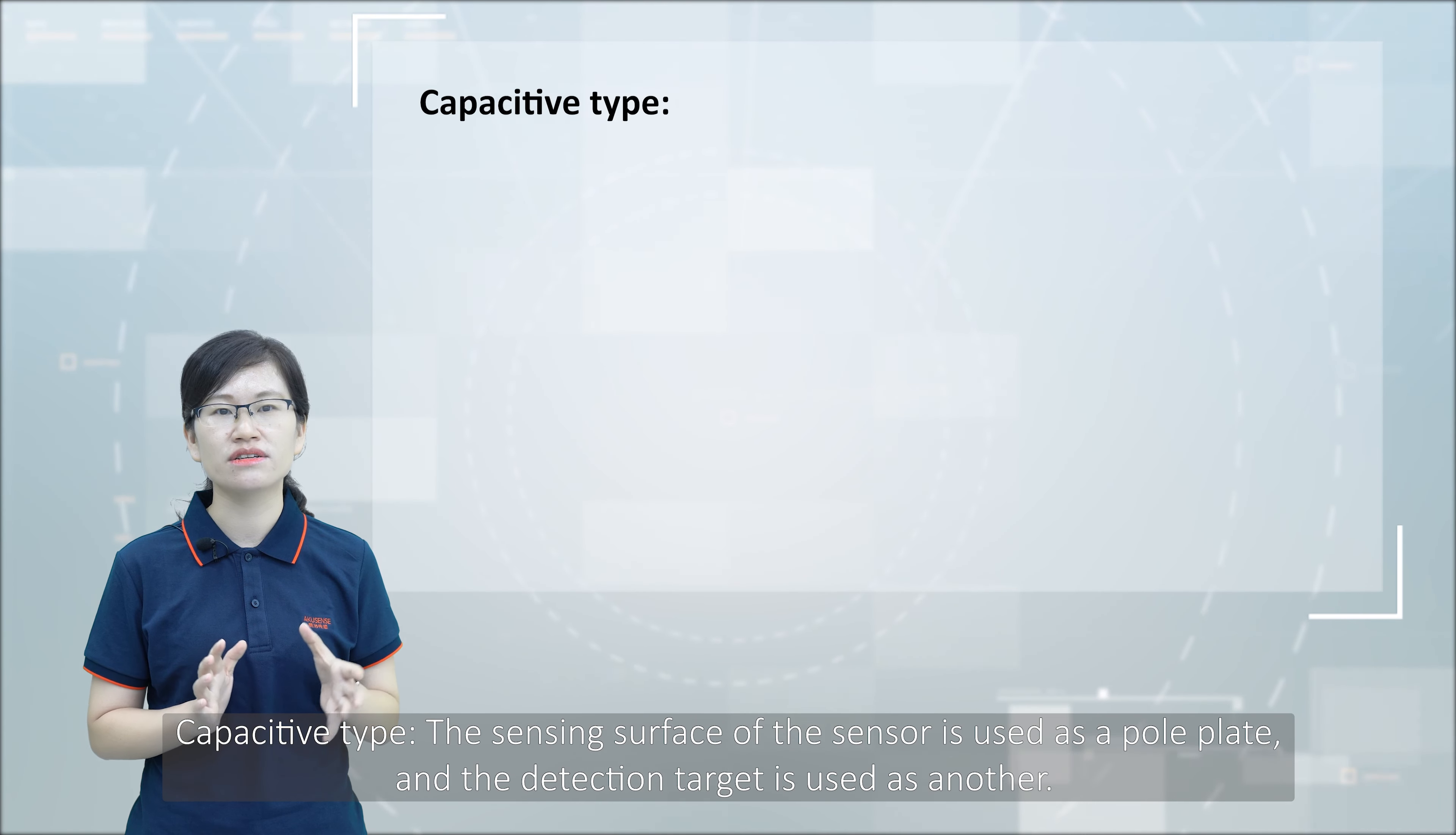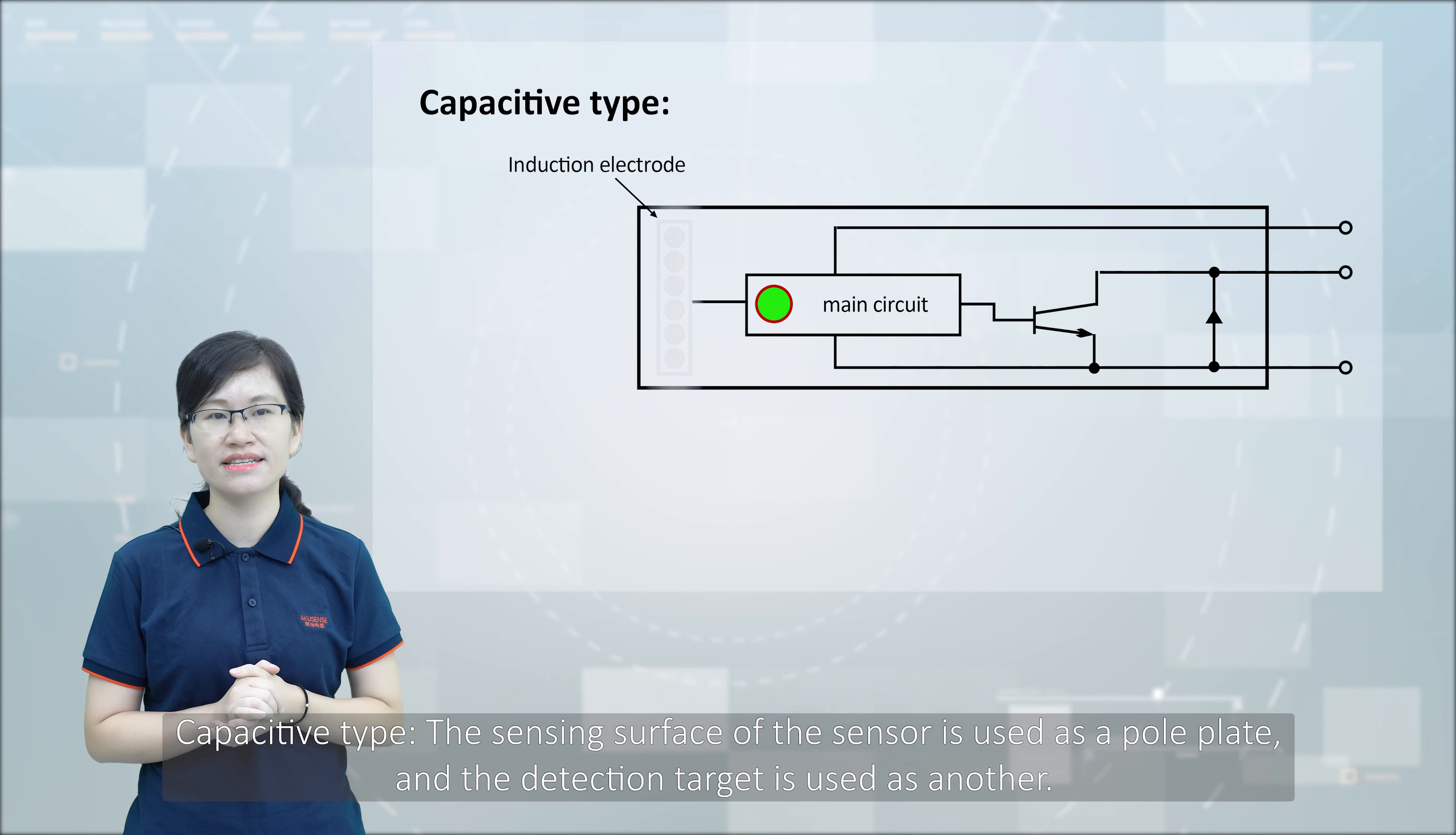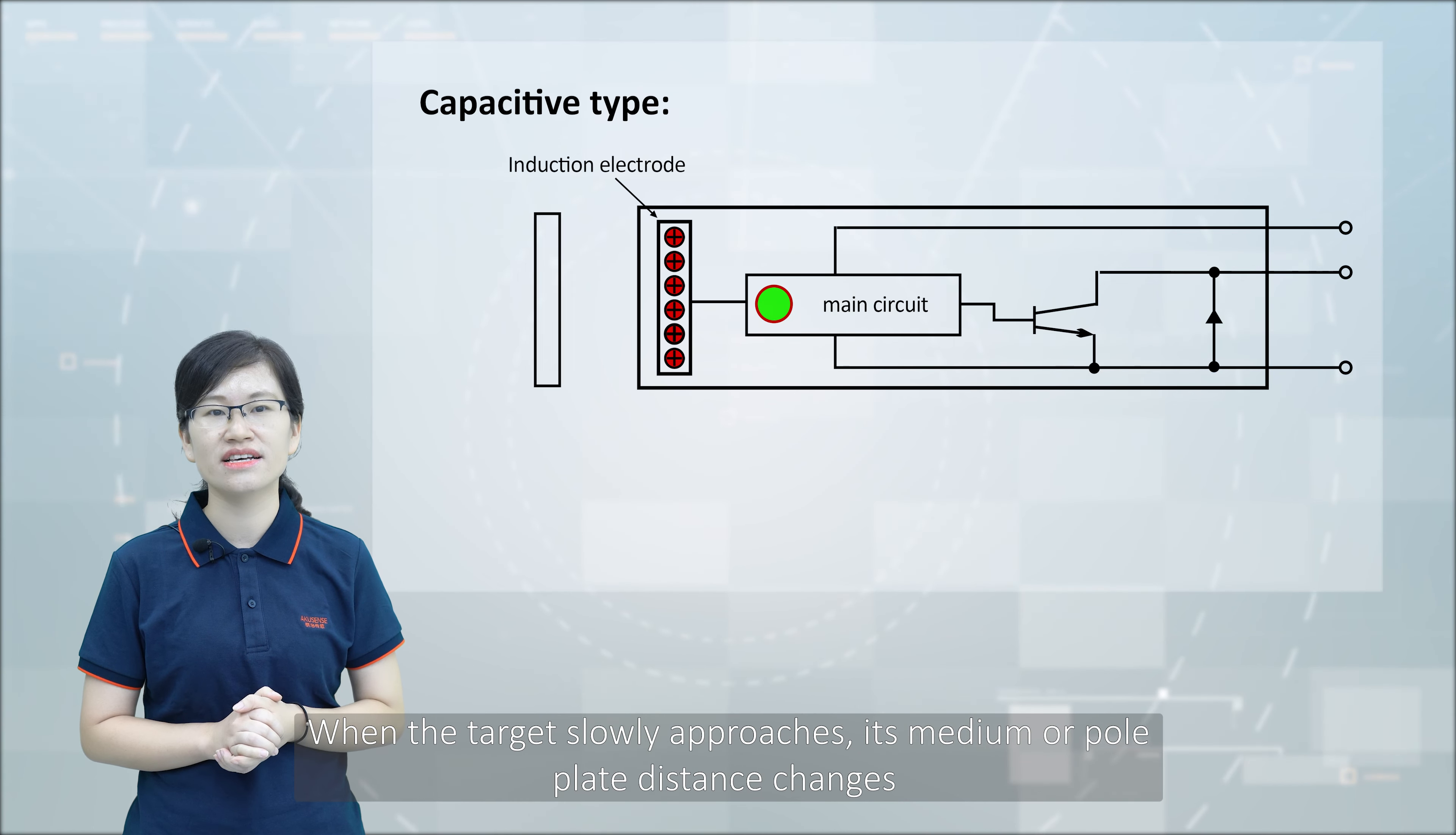For capacitive type, the sensing surface of the sensor is used as a power plate, and the detection target is used as another electrode. When the target slowly approaches, the power plate distance changes.